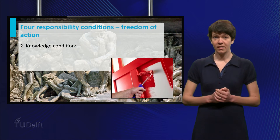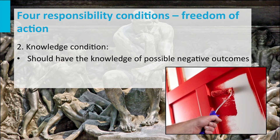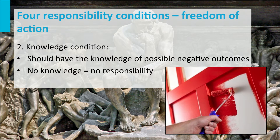The second condition is the knowledge condition. A person should have the knowledge that his or her action would lead to some negative outcome. If the person does not know this, he will generally not be held responsible. Say someone painted the door of his house without putting a notification that the door was wet. If I happen to touch the door and thereby destroy the new painting, it is not fair to hold me responsible or to blame me — I did not and could not know that the door had just been painted and that I should not touch it.